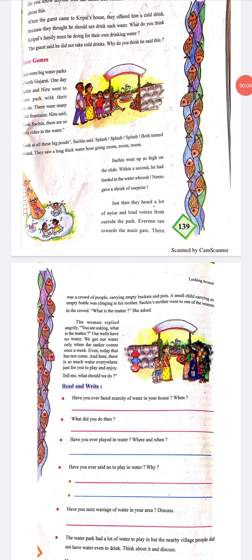We read various types of news items about water in newspapers. For example: scarcity of water, drinking water getting contaminated, people suffering from diarrhea and vomiting due to drinking dirty water, crops drying up due to lack of water, and when there was a hole in the water canal, the surrounding fields were flooded.